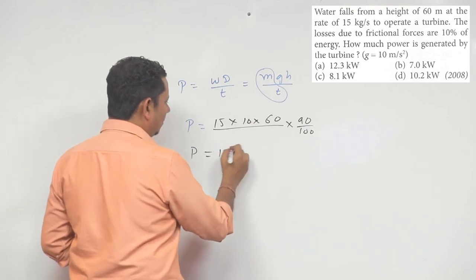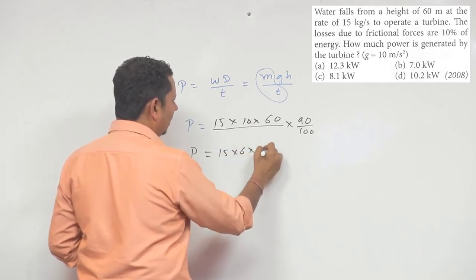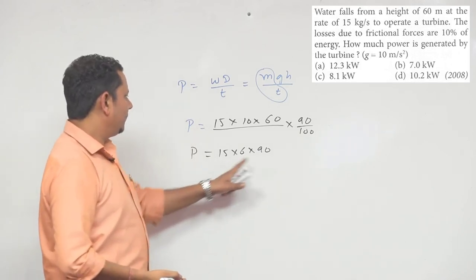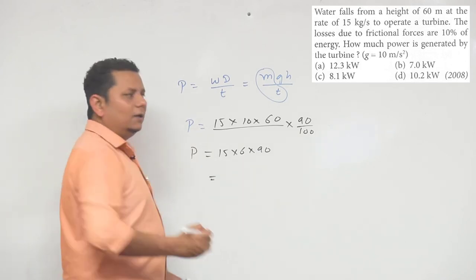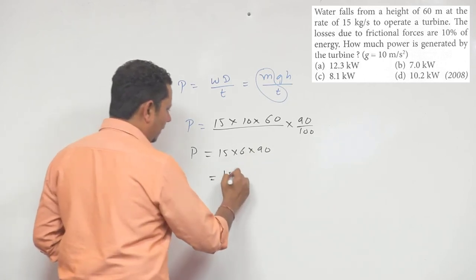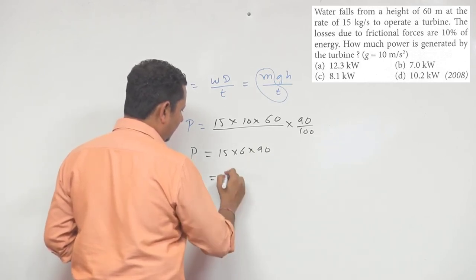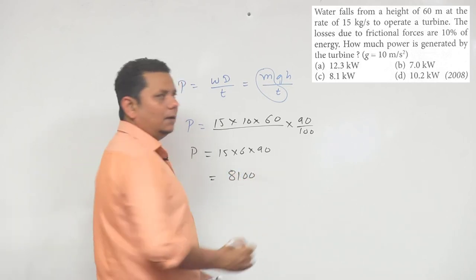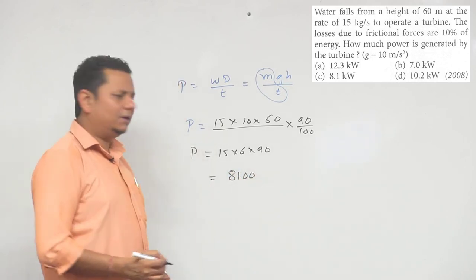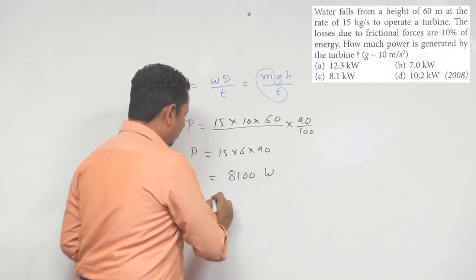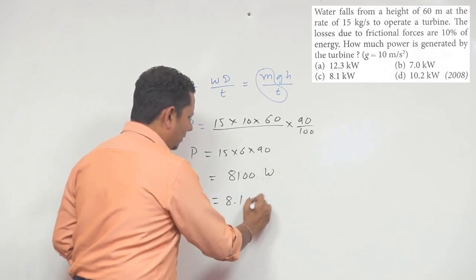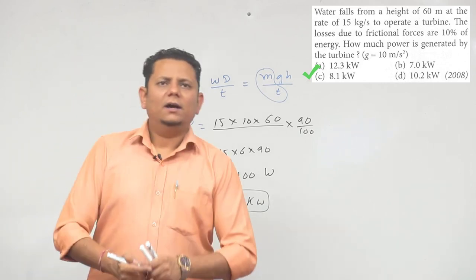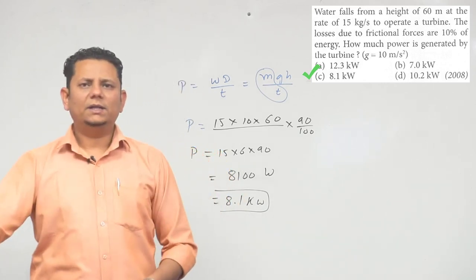So this will be 15 multiplied by 6 multiplied by 90, which equals 8100 watts, or 8.1 kilowatt. Based on this calculation, option C, 8.1 kilowatt, will be the right answer.